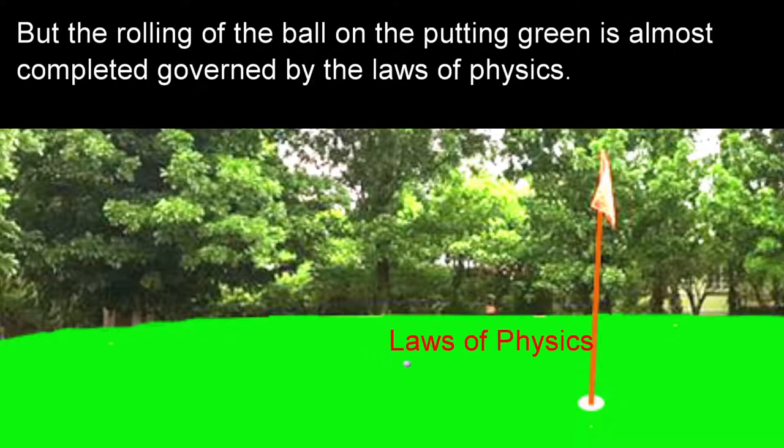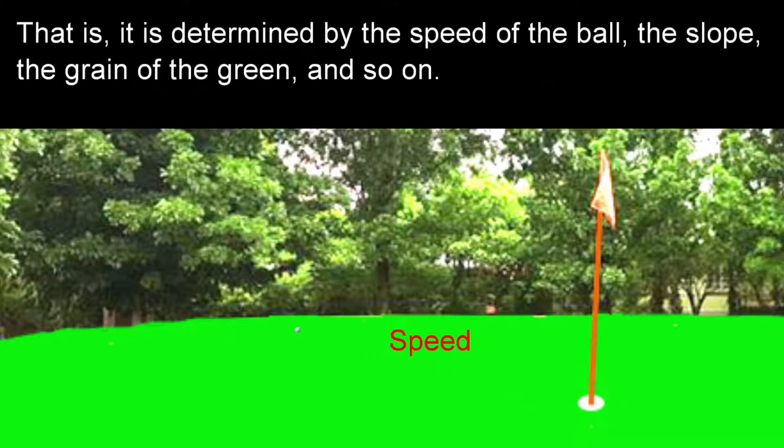But the rolling of the ball on the putting green is almost completely governed by the laws of physics. That is, it is determined by the speed of the ball, the slope, the grain of the green, and so on.